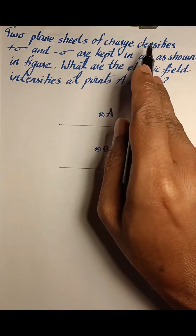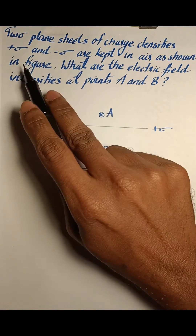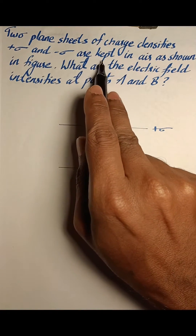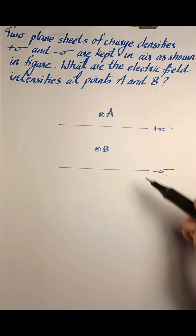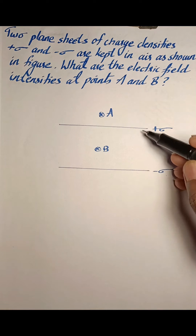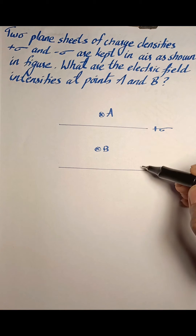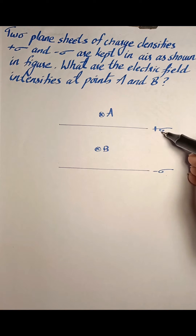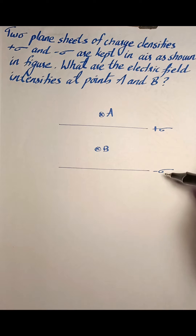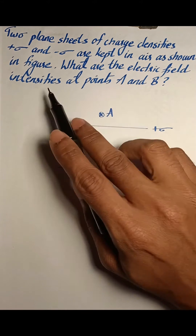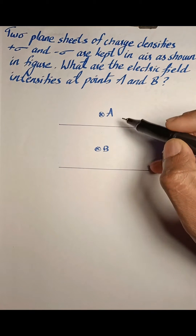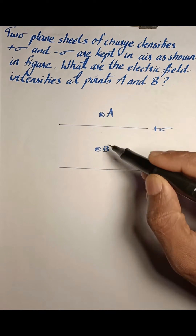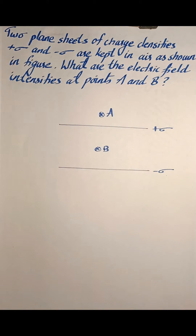Two plane sheets of charge densities plus sigma and minus sigma are kept as shown in the figure. Two charge sheets are given — one with a positive sigma charge and one with a negative sigma charge. We need to find the electric field intensity at points A and B.